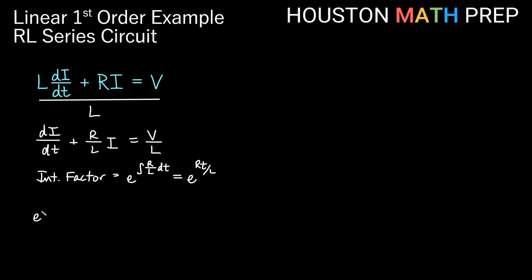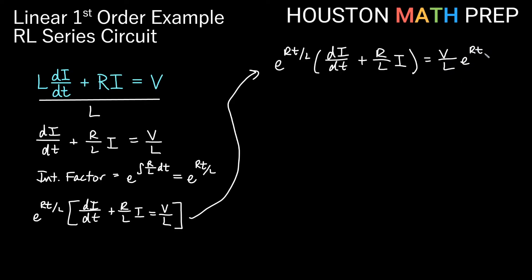We'll go ahead and multiply the entire equation by that integrating factor e to the RT over L. That'll be times the dI/dt plus R over L I equals V over L. We'll go ahead and do that over here. What I'm going to do is not distribute on the left side like we've done in the rest of our linear equation videos, but I am going to go ahead and multiply out on the right side. So we'll have dI/dt plus R over L times I on the left, and this would just be V over L times this exponential. So I'll have V over L e to the RT over L.